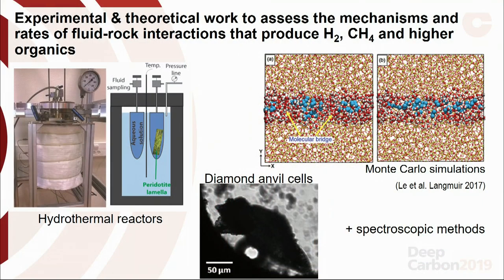A third DCO goal of our community was to use experimental and theoretical approaches to assess the mechanisms and rates of rock-water interactions that produce hydrogen, methane, and potentially higher organics — particularly in the frame of the serpentinization reaction that produces a lot of hydrogen. This has been done using conventional hydrothermal reactors by many groups worldwide. We also set up diamond anvil cells to tackle pressures relevant to the lower crust and upper mantle, and theoretical simulations like those carried out by the group of Alberto Striolo and Dave Cole, looking at the effect of nanoconfinement on the dynamics and rates — how nanosized pores change the reactivity and behavior of methane and small hydrocarbons.